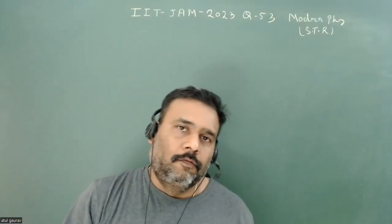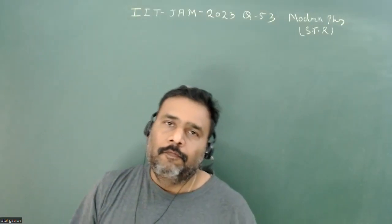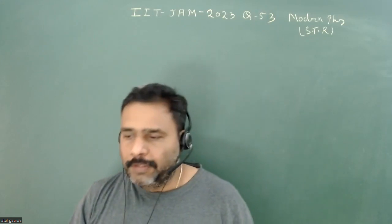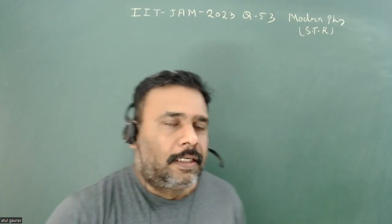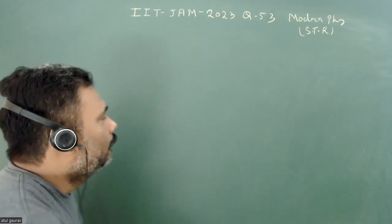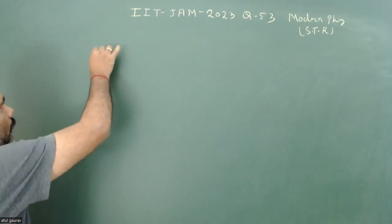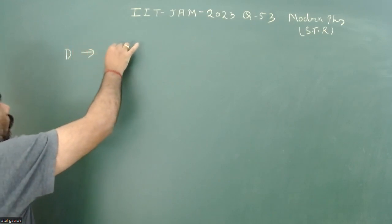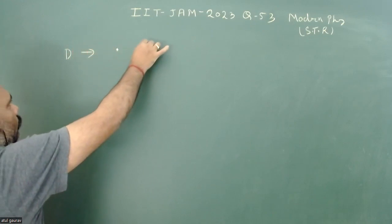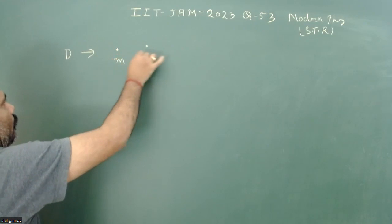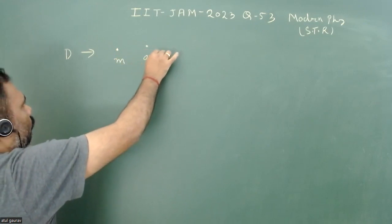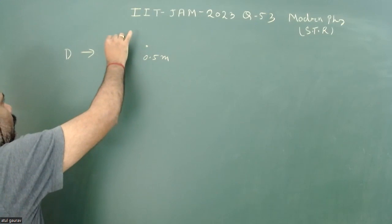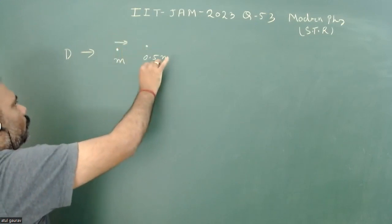Hello students. Let's try to solve one more problem from ITGEM 2023, and this problem is again from special theory of relativity. This is a very nice problem. There is a detector which will be broken into two particles whose rest masses are m and 0.5m, and both are moving in opposite directions.